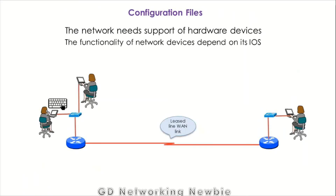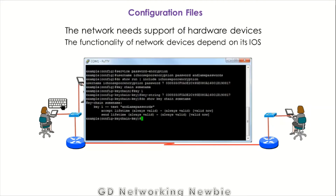As a background, we all know that a computer network needs support of hardware devices. But the functionality of all those network devices depends on its IOS. Like on our personal computer or laptop, if we don't have the operating system, the computer will not work. Same is the case with Cisco routers or switches — we need an operating system called IOS, the Internetwork Operating System.